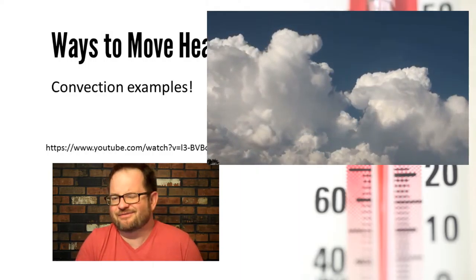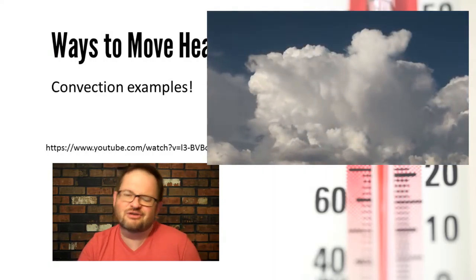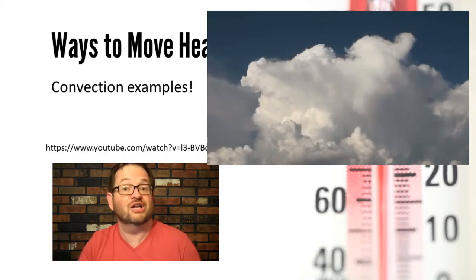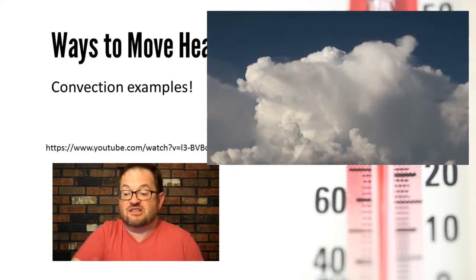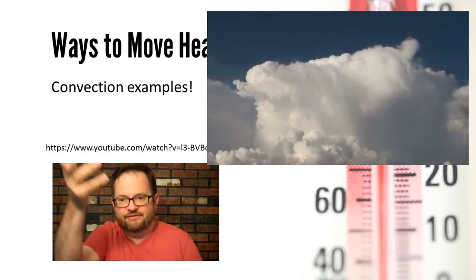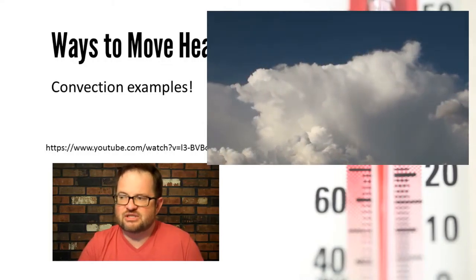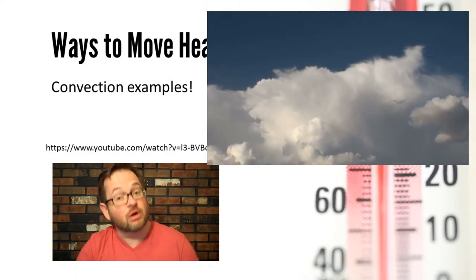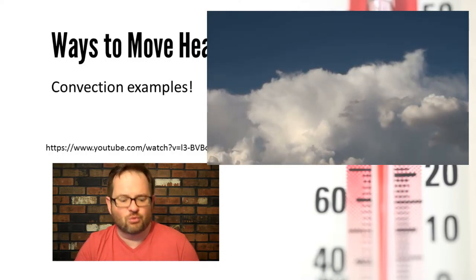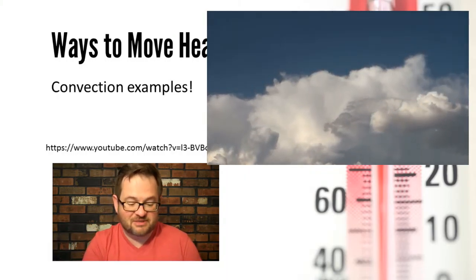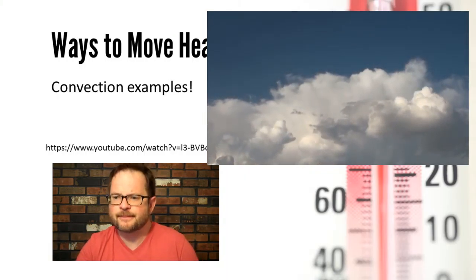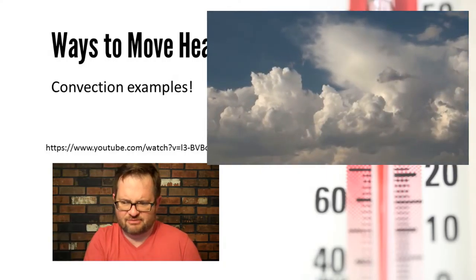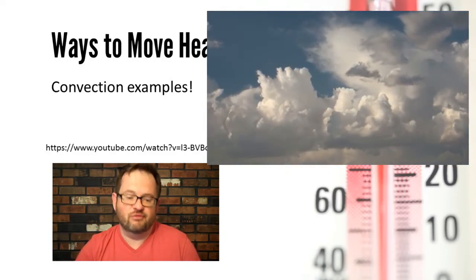The word thunderstorm doesn't really tell you very much meteorologically. Thunder's interesting, but it doesn't have all that much meteorological impact. The fact that the thunderstorm is there because it is lifting and lowering air as a way of moving heat is fundamental to how the thunderstorm works. So meteorologists use the word convection specifically to mean thunderstorms, though it could also mean any time you're moving air vertically as a way of moving heat.